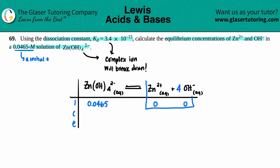C stands for Change. Find the zero side — you can only go up from there — so the change for zinc must be positive and the change for hydroxide must be positive, while the complex ion drops. We don't know by how much, so we label it x. Following coefficients: the complex ion has no coefficient so it's minus x; zinc has no coefficient so it's plus x; but there are four OH⁻ ions, so that's plus 4x.